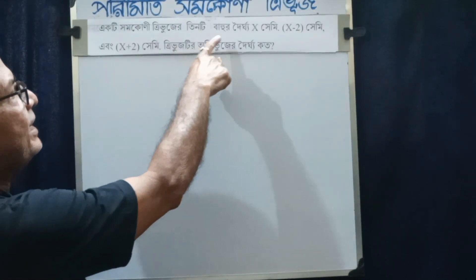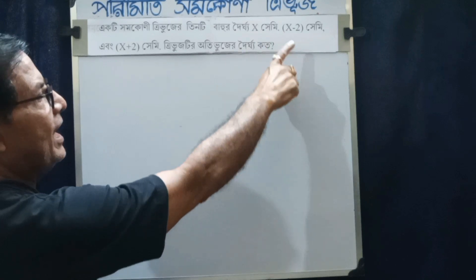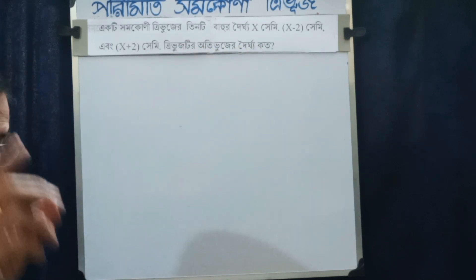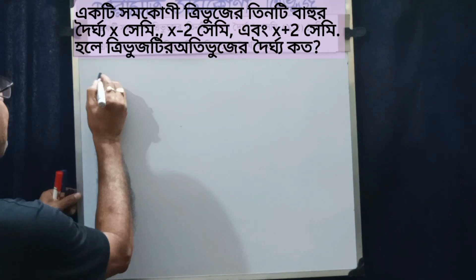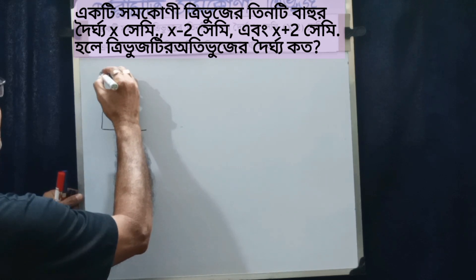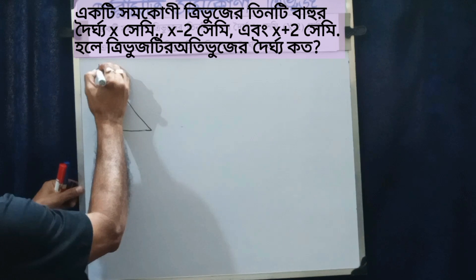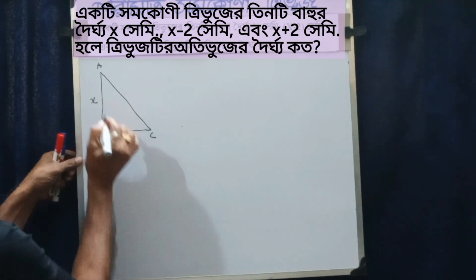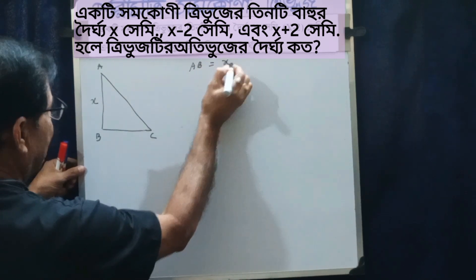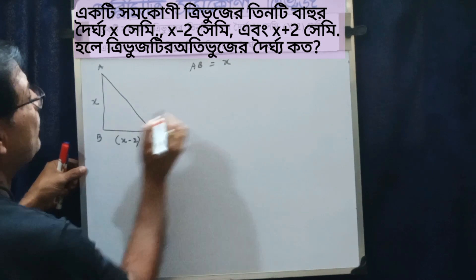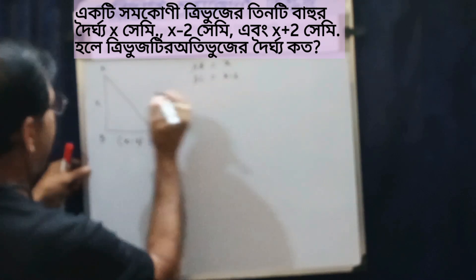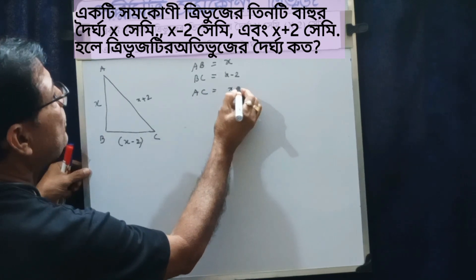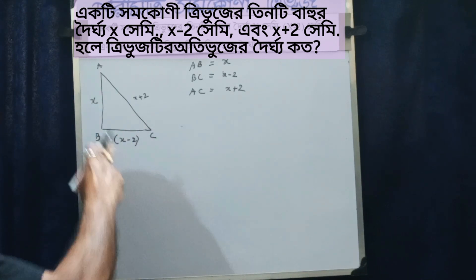ત્રિભુજ ABC — ત્રણ બાહુ — (x+2) સેન્ટિમીટર — ત્રિભુજ ABC. AB = x, BC = x − 2. AC = — આ આ બે બાહુ — AB = x, BC = x − 2.